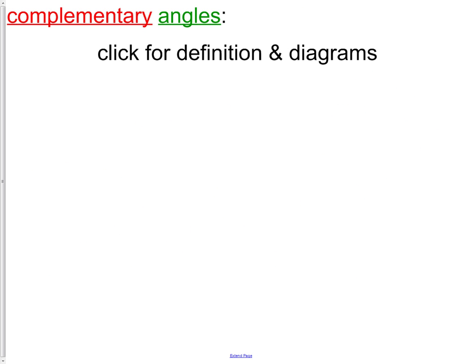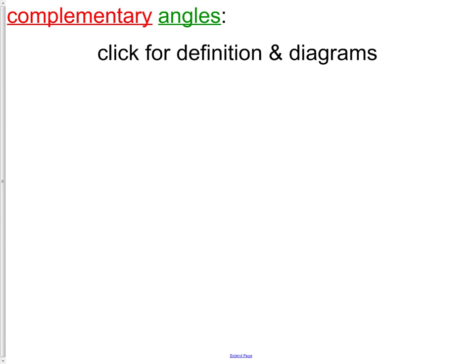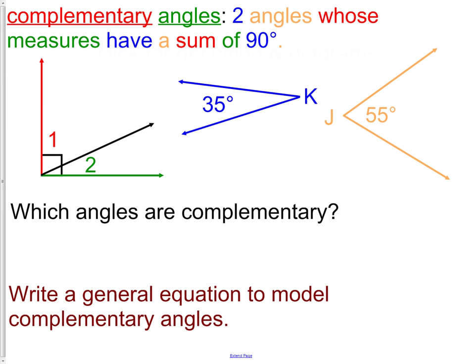Now complementary angles, I know you learned about in the middle school. So hopefully this is a bit of a review. Complementary angles are two angles whose measures have a sum, remember sum is addition, have a sum of 90 degrees. So we're looking for any two angles that add up to 90 degrees. In this picture, angles one and two would add up to 90 degrees, because they're on a major angle of 90 degrees that's separated by a ray. So the two smaller angles do add up to 90 degrees.